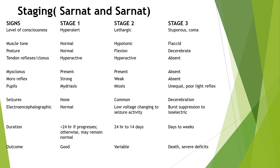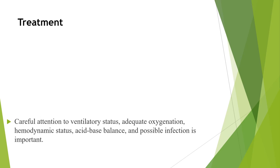In Stage 2, the EEG most of the time shows low voltage changing to seizure activity. In Stage 3, the level of consciousness is comatose or stuporous. There is flaccid or decerebrate posturing, absent tendon reflexes, absent myoclonus, absent Moro reflex, unequal or fixed pupils, and decerebration. On EEG, burst suppression to isoelectric can be seen. The outcome for Stage 3 is most of the time poor.